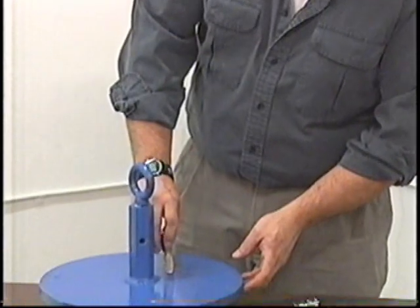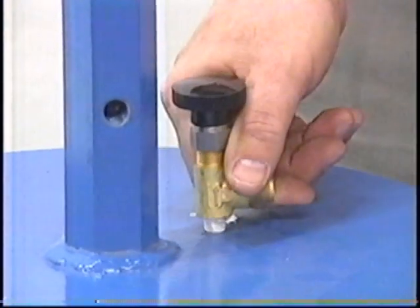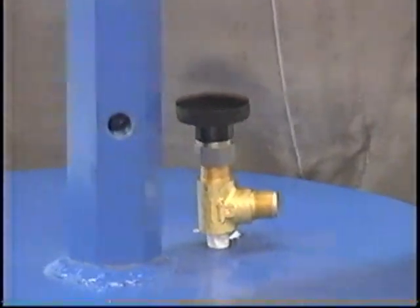After all items have been Teflon taped, you will now install the valves and quick couplers onto the water jacket lid. The first item will be the low-pressure bleed valve, which sits vertically on the lid jacket. The next item will be the high-pressure bleed valve.